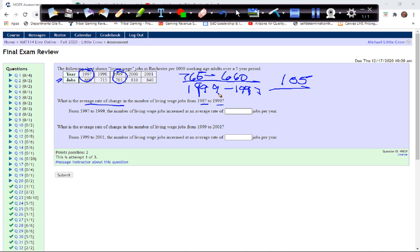So 765 minus 660, that's going to be 105. And this is three years, right? 97, 98, 99. 97 to 99, if we subtract those two we get two years.